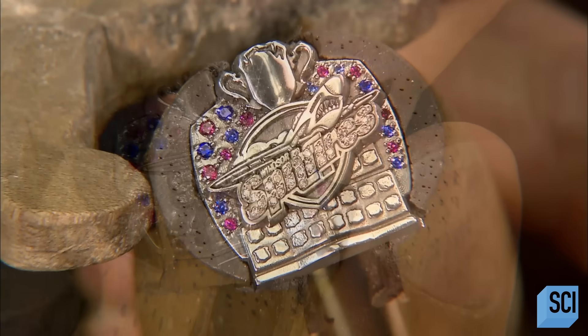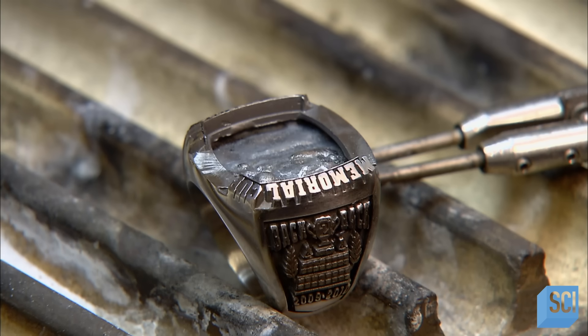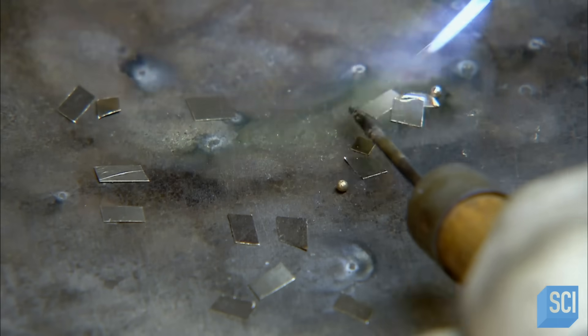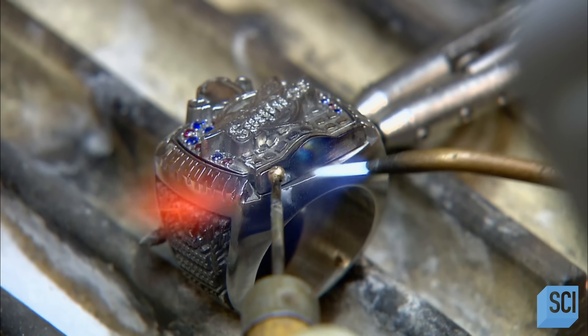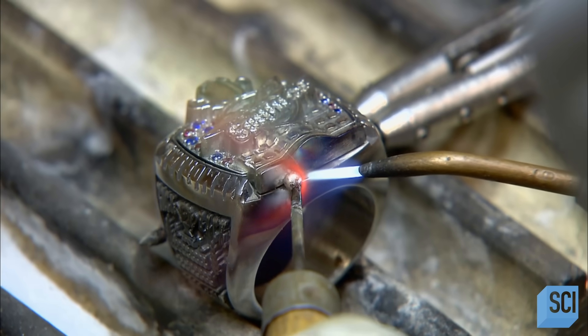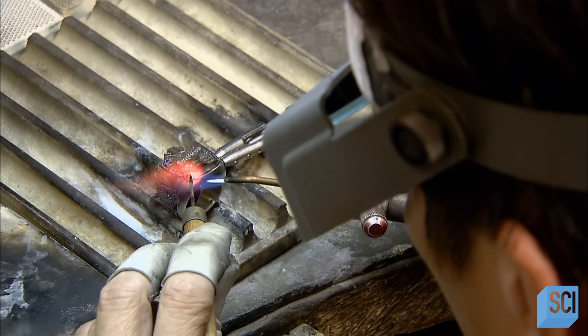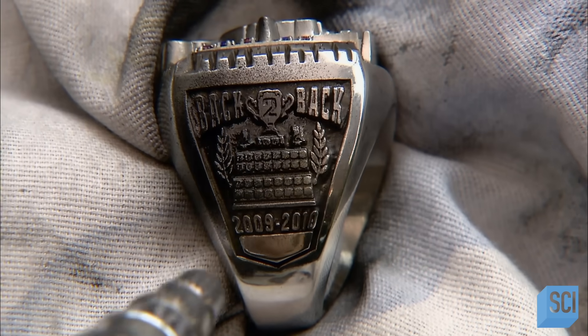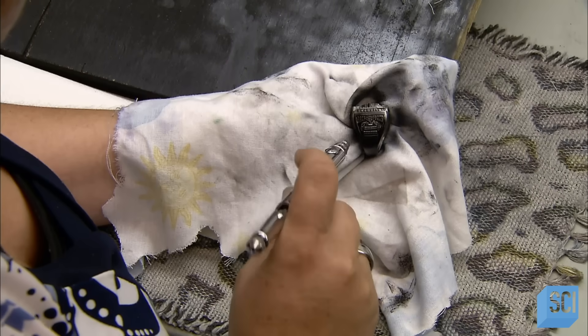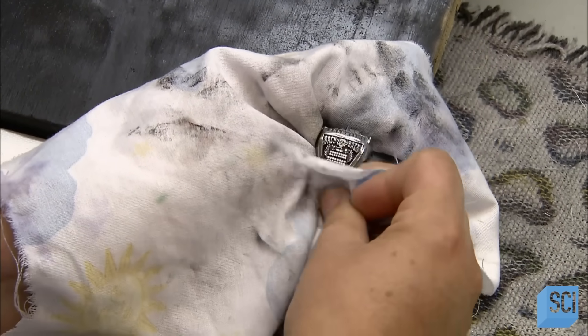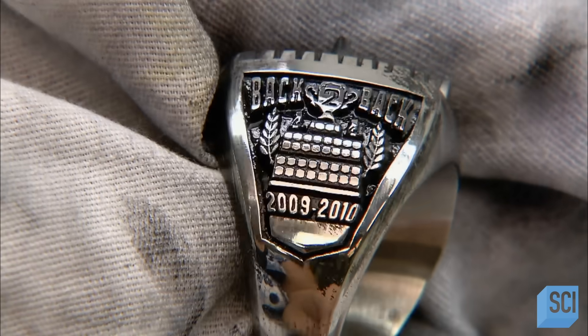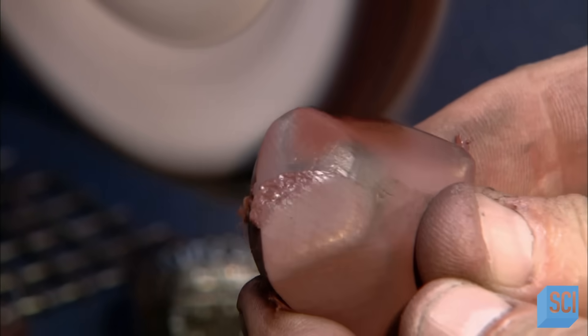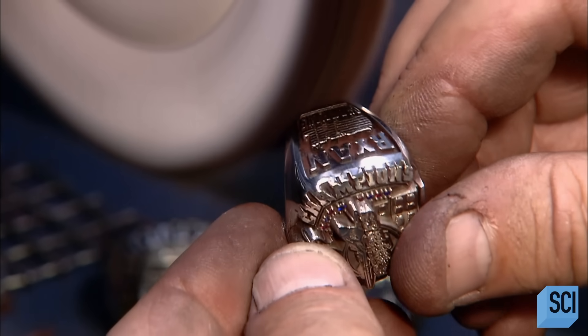The top of the ring complete, they now solder it to the base. Using an airbrush, they apply a fine mist of black paint, then wipe it off. This leaves behind a black background highlighting the ring's details. Now they apply some polishing compound to a cloth buffing wheel and polish the ring to a high gloss shine.